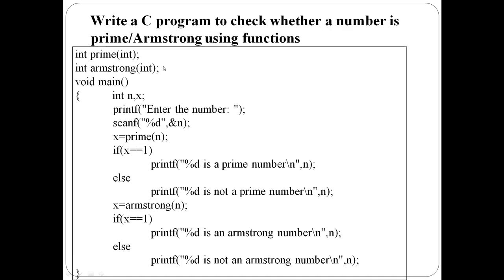These two functions are declared at the beginning of the program. The prime function takes one integer argument and returns an integer. The Armstrong function also takes and returns an integer. In the main function, enter a number n. Then call: x equal to prime of n. This function returns either 0 or 1. If x equals 1, it is a prime number; otherwise it is not.